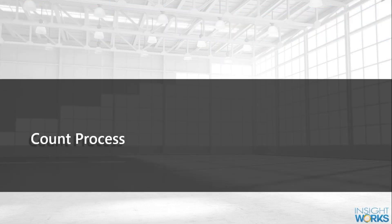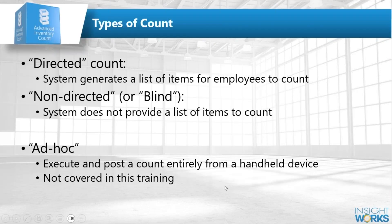First, let's talk about the process for doing an inventory count within the Advanced Count. There are two types of counts — technically three. The directed or defined count means the system will tell you which items you need to go out and find and count. It's typically best for cycle counts, though many use it for full physical counts as well. It generates a list of items you need to find and report quantities for.